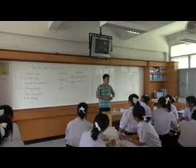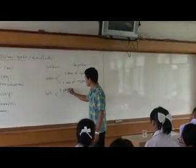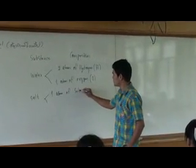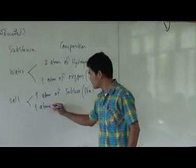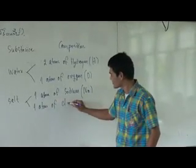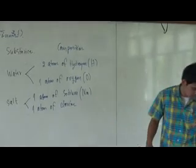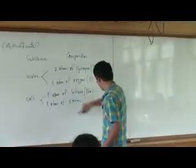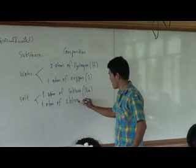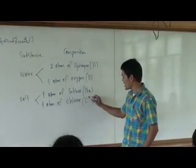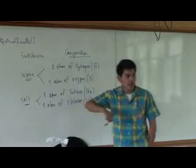What is the composition of salt? Salt, in chemistry, is named sodium chloride. So it is composed of one atom of sodium and one atom of chlorine. This is the composition of water and salt. Every substance has its own composition.